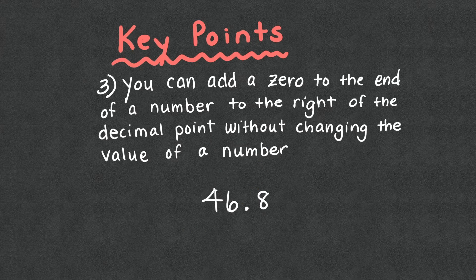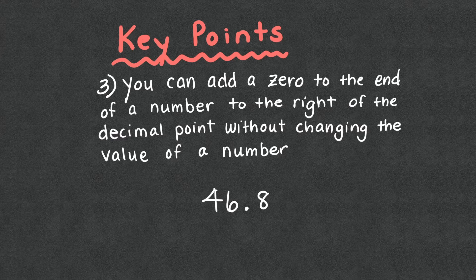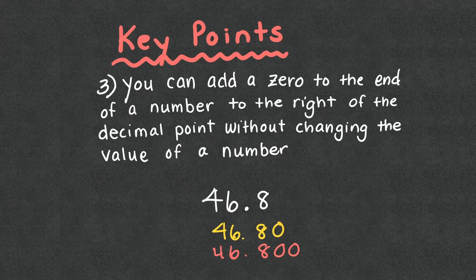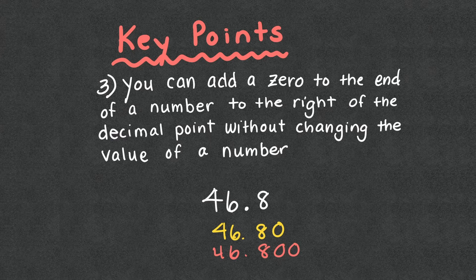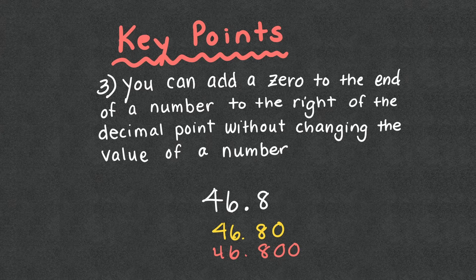You can add a zero to the end of a number to the right of the decimal without changing the value of the number. So 46 and 8 tenths can also be written as 46 and 80 hundredths can also be written as 46 and 800 thousandths. We could continue forever. It does not change the value. They can be also cut off because they do not hold any value. But sometimes we do add them on to make addition and subtraction a little bit easier for us.